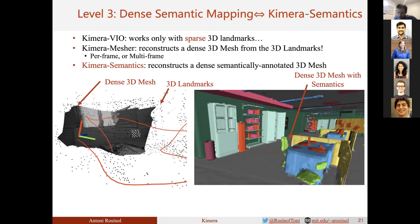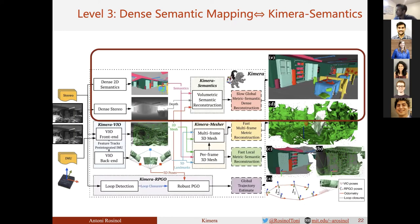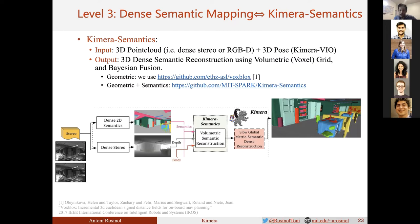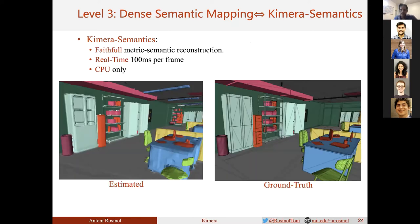Finally, to encode semantic information, we reconstruct a dense semantically annotated 3D mesh using Kimera-Semantics. As input, Kimera-Semantics takes a depth map, a semantic mask, and a 3D pose per frame. It integrates the depth and semantic information in a 3D volumetric grid using Bayesian updates. The approach uses approximations that enable real-time performance using only the CPU, generating an accurate dense reconstruction of the scene with semantic labels, as shown here. On the left, the estimate; on the right, the idealized ground truth.